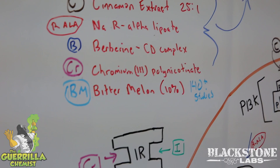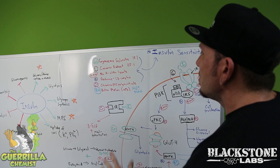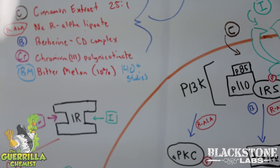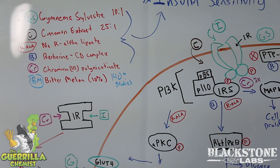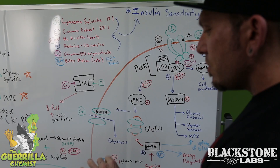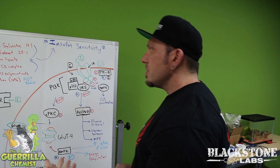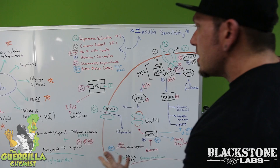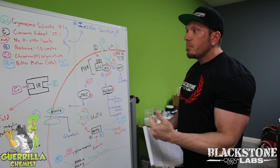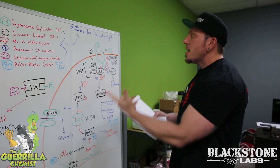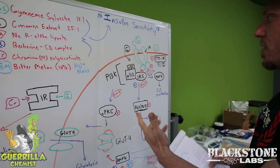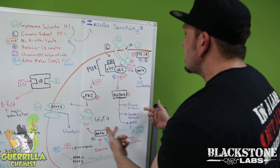Bitter melon is also a super compound — it's been studied since the dawn of time with over 140 studies on insulin and bitter melon alone. It's known as the 'vegetable insulin.' In other countries they used to grind up the bitter melon fruit and make it into an injectable oil used as insulin, and it actually worked well. The reason is a molecule called polypeptide-P, which works basically the same as insulin — it activates the same cascade as normal insulin.